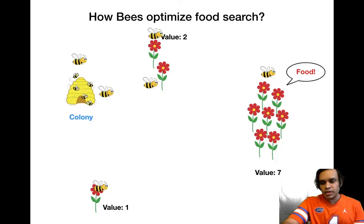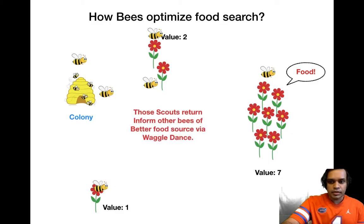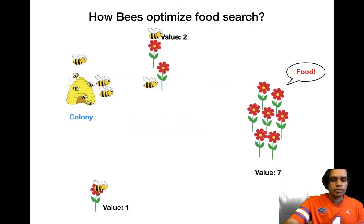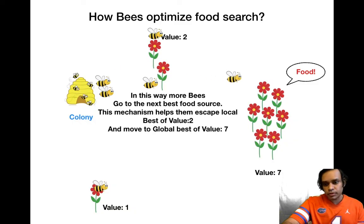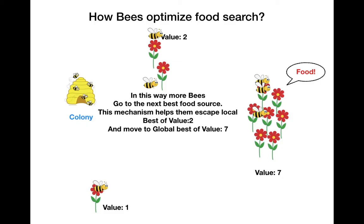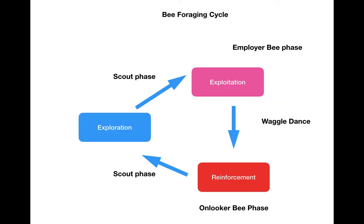Now the bee who is at the food source of value seven returns back with this new updated information and does a waggle dance to tell these guys there's a source of food of value seven - if you follow me we can go exploit it. These bees look at the waggle dance and follow him to exploit the food source of value seven. So this is the gist of how the bee colony optimization works.